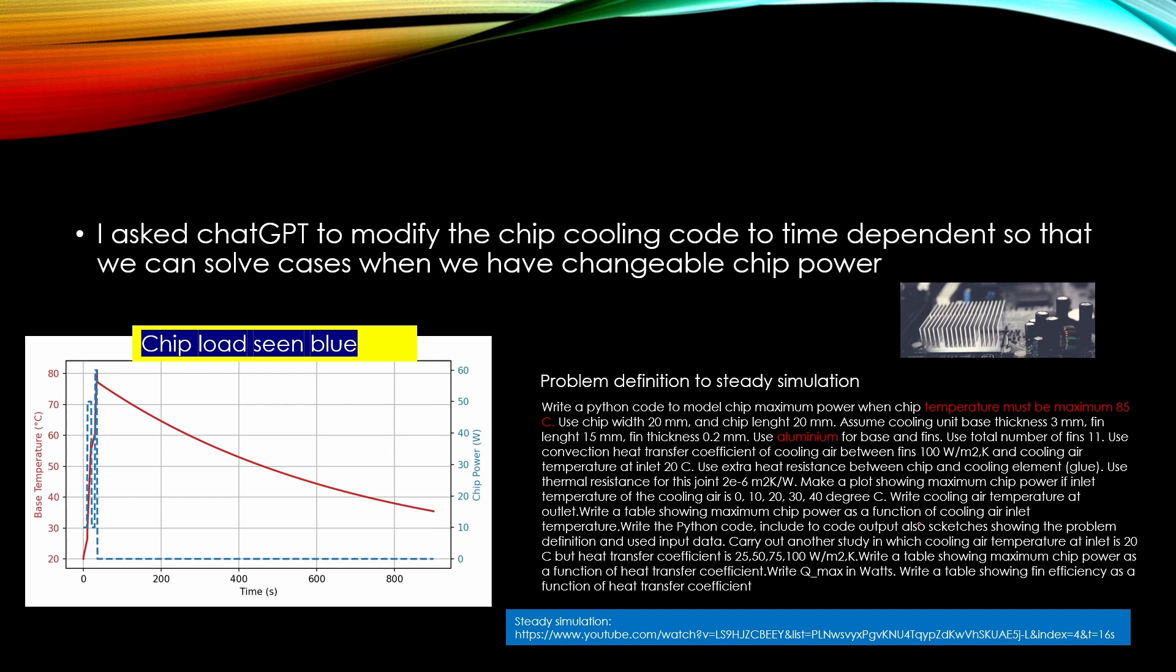And the idea was to find the maximum chip power so that the temperature is below 85 degrees C. Now I asked ChatGPT to modify this chip cooling code so that we can have a changing load. And in this picture you will see the changing load.